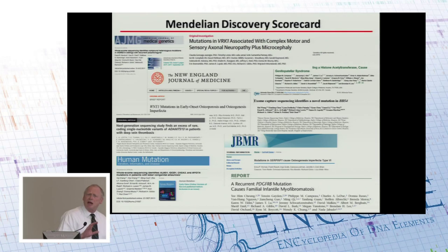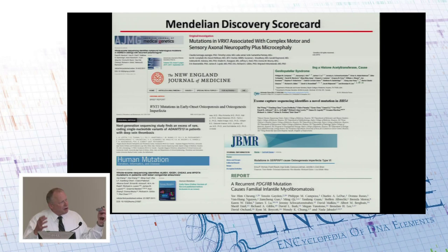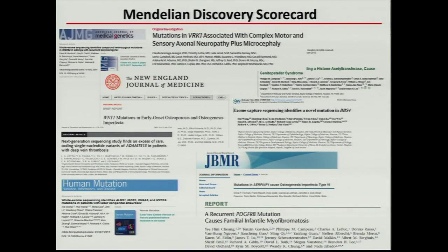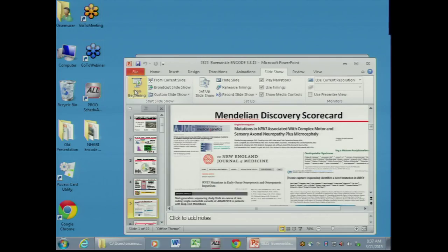By anybody's standards, these initiatives have been very successful. I call it a scorecard — over the last five years, both in the Mendelian arena and in the complex disease arena, we've been enormously successful in identifying genes and often identifying variants within those genes that are contributing to disease. There's really no question about that part of it.